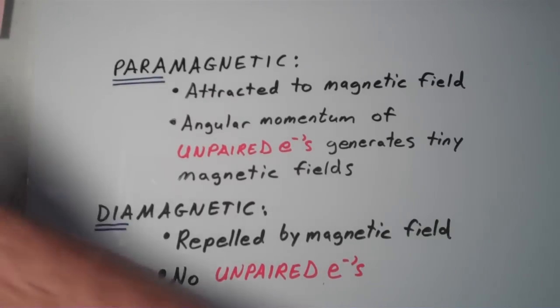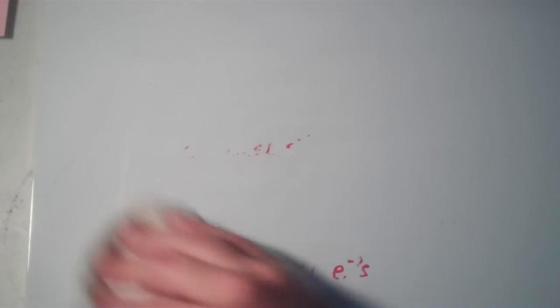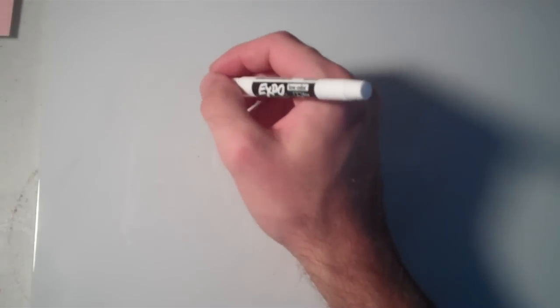So let's go through the simplest of all examples. Let's go through the H2 molecule real quick. We'll see if we can figure out whether H2 is paramagnetic or diamagnetic.